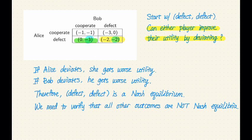By the exact same argument, you can verify that cooperate defect is also not a Nash equilibrium because Alice wants to deviate to defect instead of cooperating. Therefore, we can conclude that there is one pure strategy Nash equilibrium of this game, and the equilibrium is that both players will choose to defect.